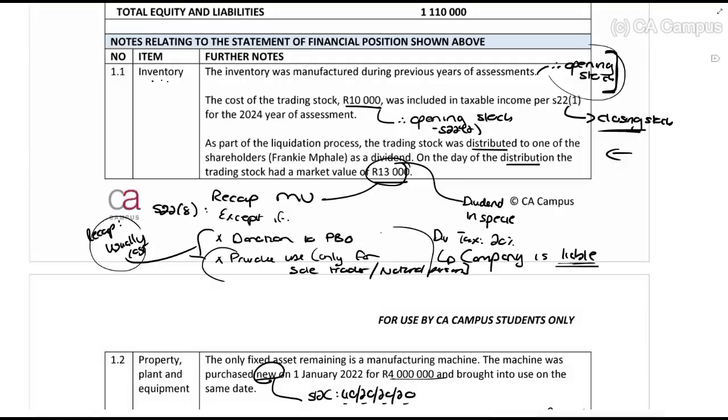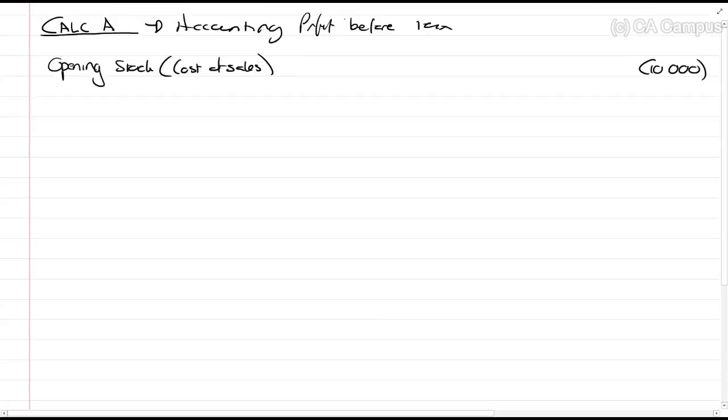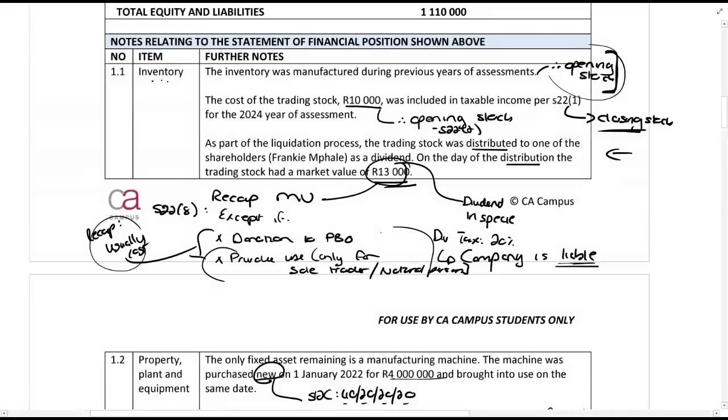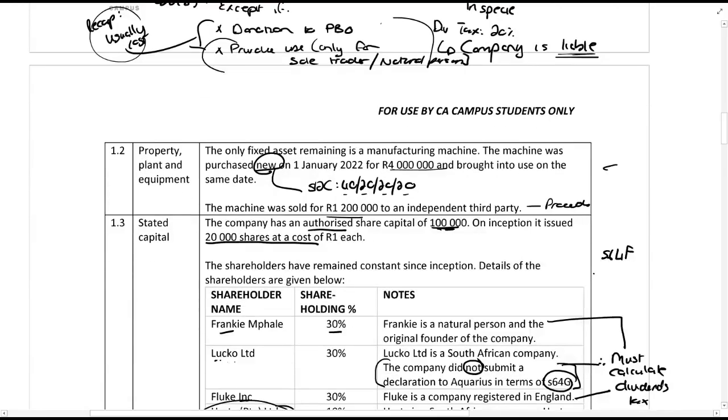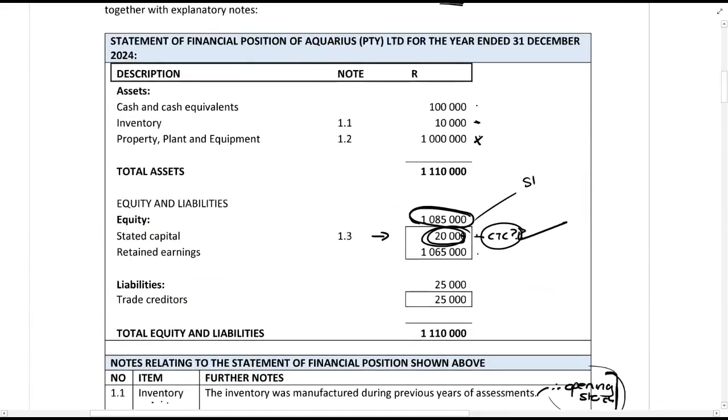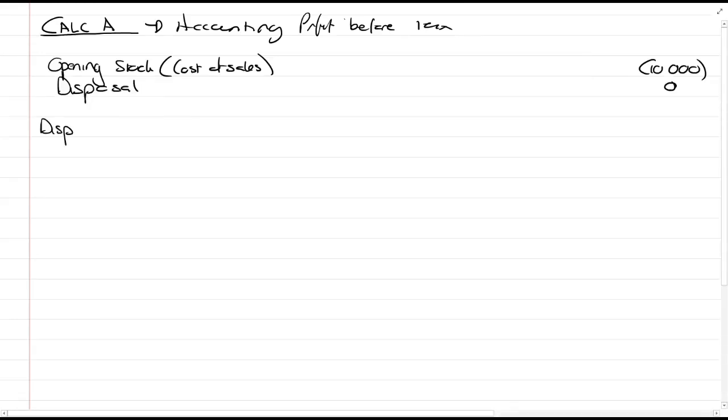and just to take you through what we would do there for accounting. For accounting, let's just quickly go back. Let's see what happens. So, accounting is you now, you just account for everything that happened. So, the first thing is there was this trading stock. The trading stock, the opening stock forms part of your cost of sales calculation. So, this was part of your cost of sales is a 10,000 rents deduction from profit. So, this is your accounting profit before tax. 10,000. Then, what do we do for accounting here? We give it away for free.